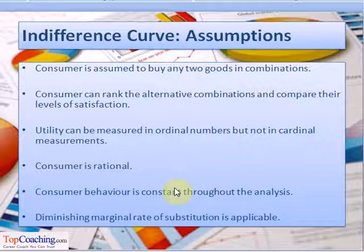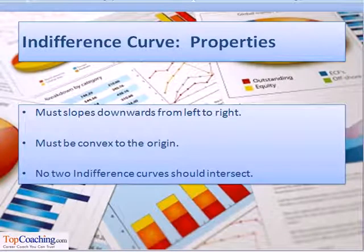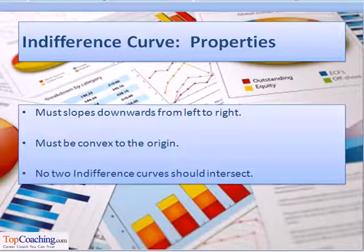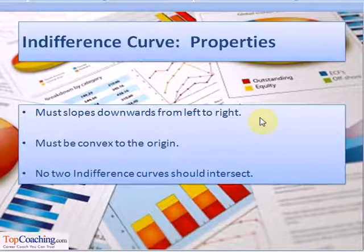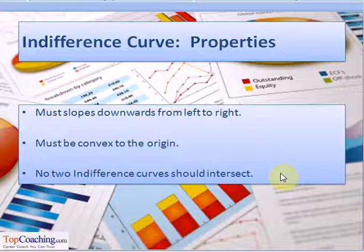Fifth, consumer behavior is assumed to be constant throughout the analysis. Lastly, the indifference curve analysis assumes diminishing marginal rate of substitution. The indifference curve also possesses certain key characteristics: the indifference curve must slope downwards from left to right, the indifference curve must be convex to the origin, and no two indifference curves should intersect each other.